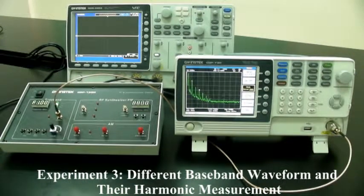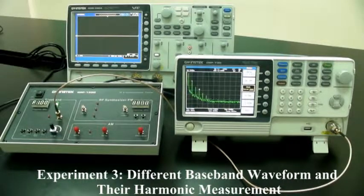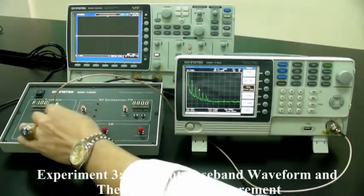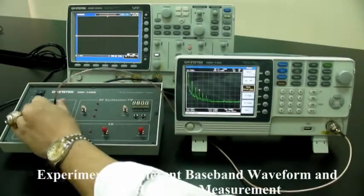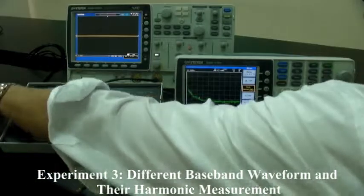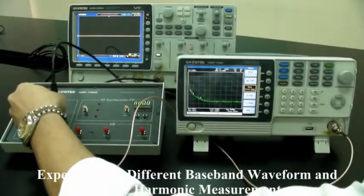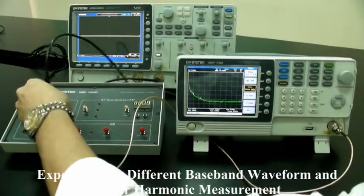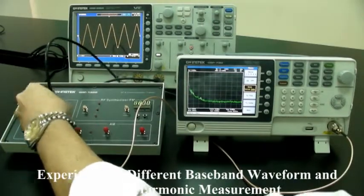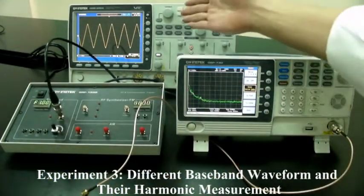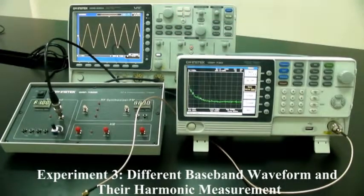After measuring the spectrum, connect the output port to the input port of the oscilloscope and measure the time-domain waveform of the triangular wave. Now, the triangular wave is shown on the oscilloscope. This concludes my demonstration.